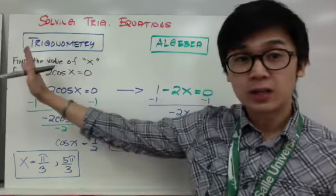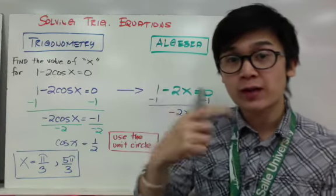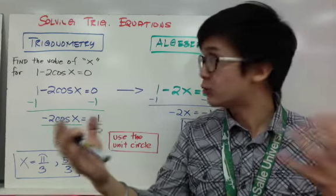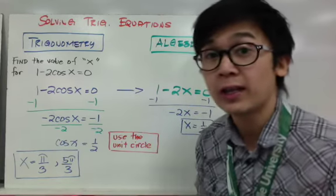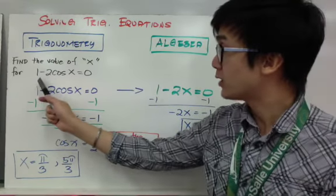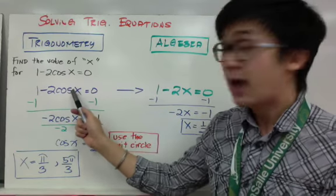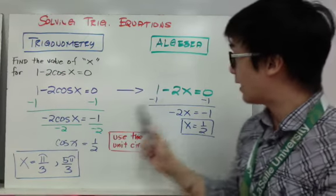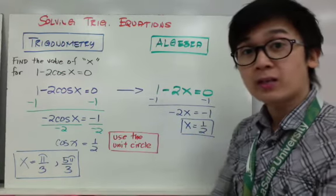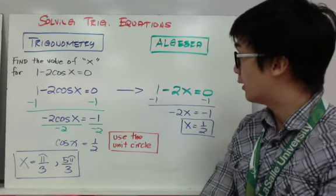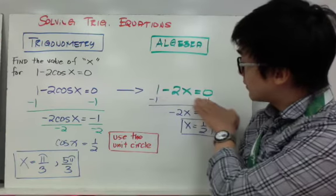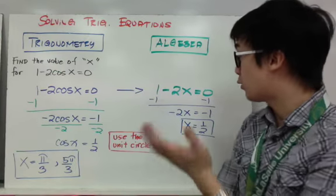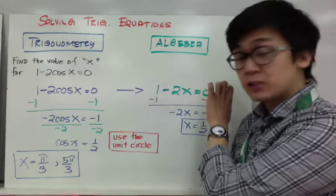I have a trigonometry version and an algebra version side by side so you can think of an algebraic equation related to your trig function. For the trig function 1 minus 2 cosine x = 0, I can convert it into an algebraic equation by ignoring cosine, giving me 1 minus 2x = 0, which is less intimidating and easy to solve.